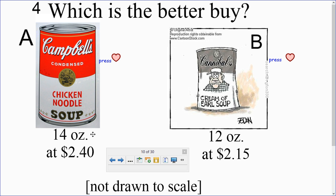So, what we really need to do is to figure out what would be the unit price of the soup. So, how much would one ounce be? So, if we took $2.40 and divided it by 14 ounces, that would give us 0.1714, which is one ounce is about 17 cents.